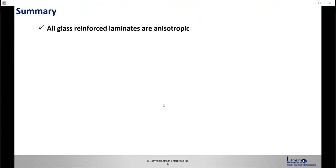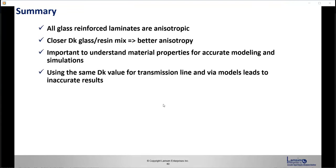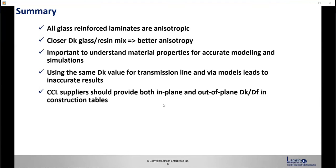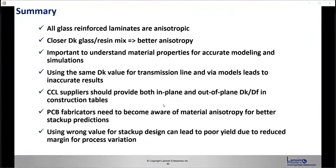In summary: all glass-reinforced laminates are anisotropic. The closer the DK of glass and resin, the lower the anisotropic effect. It's important to understand material properties for accurate modeling and simulation. Using the same DK value for transmission line and via modeling leads to inaccurate results in your whole channel model. Copper clad laminate suppliers should provide both in-plane and out-of-plane DK/DF in their construction tables. PCB fabricators need to be aware of material anisotropy for better stack-up predictions. And using wrong DK values for stack-up design can lead to poor yield due to reduced margin for process variation.